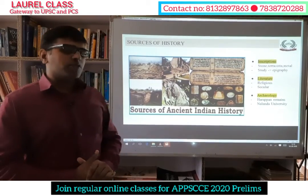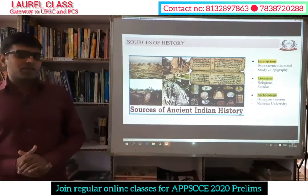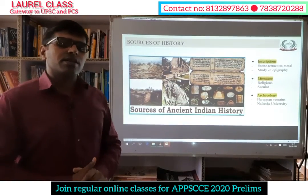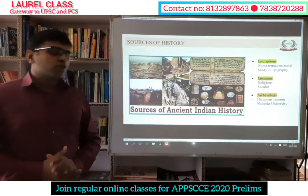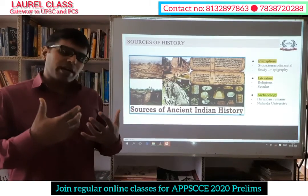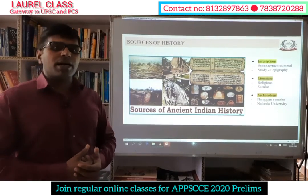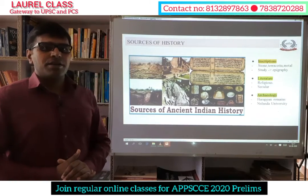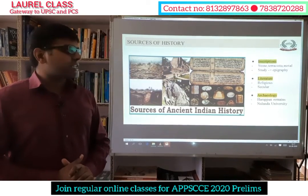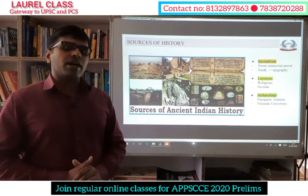The third important source which tells us about our history is archaeology — any structural remains. For example, from the region where the Indus Valley civilization existed near the Indus river, we have found remains known as Harappan remains, which together tell us a great deal about that period. Similarly, Nalanda University located in Bihar tells us about the history of the Magadha kingdom. So the three important sources of history are inscriptions, literature, and archaeology.